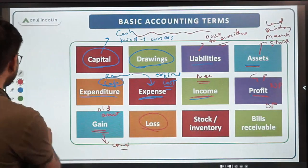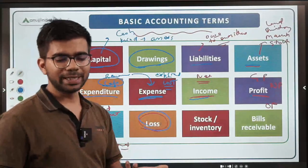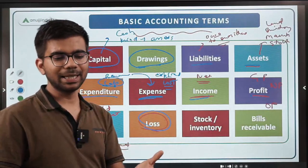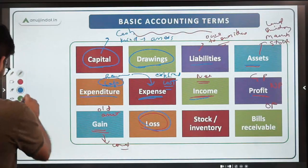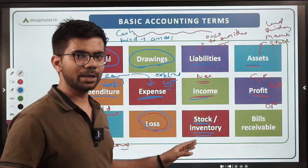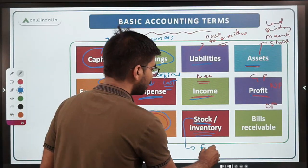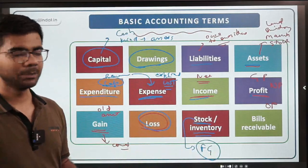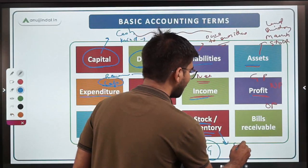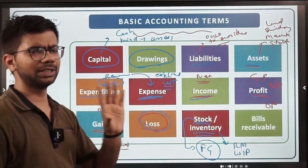Loss is the opposite of profit and gain — if your expenses exceed your revenue, you incur a loss. Stock and inventory are often used interchangeably, but there is a difference: stock generally refers to finished goods. Inventory is a broader term that includes stock of raw materials and work-in-progress as well. So stock and inventory have a basic difference.